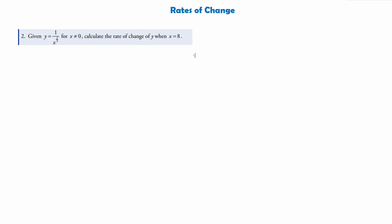As I said, the best way to practice differentiation is just to do lots of examples, so we'll do one more. Given y = 1/x^(2/3) for x not equal to 0, calculate the rate of change of y when x equals 8. We're asked to find the rate of change of y, so we're going to want to work out dy/dx. We need to simplify y a little bit because we can't differentiate this just yet — we need to prepare by making sure we don't have any x's as the denominator of a fraction.